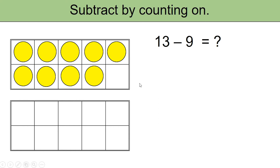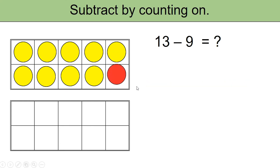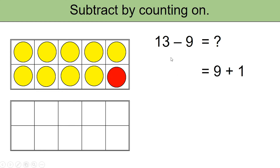Let's think: how many counters do I need to fill the tens frame? If I add one more counter using the red color, this is a complete 10. So now we have 9 plus 1, which is 10. We need to reach 13, so let's keep adding the red counters.